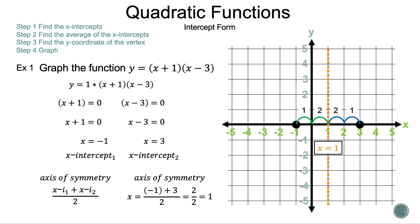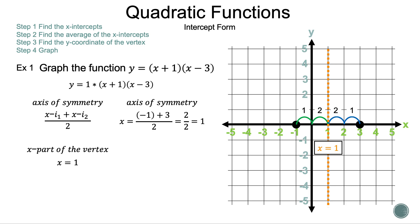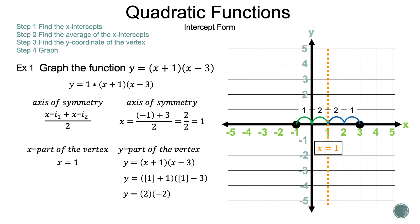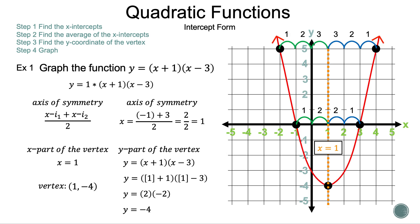The last key piece of information needed is the vertex. We use the axis of symmetry x = 1 and substitute into the function: y = (1 + 1)(1 − 3) = 2 · (−2) = −4. So the vertex is (1, −4). Since a = 1, which is positive, the graph opens up, giving us a minimum value of −4. That concludes example one.